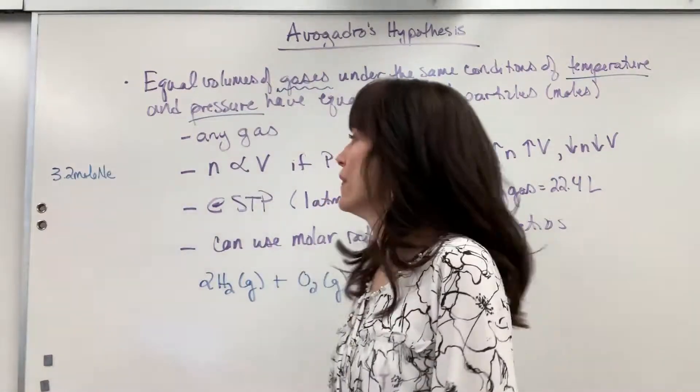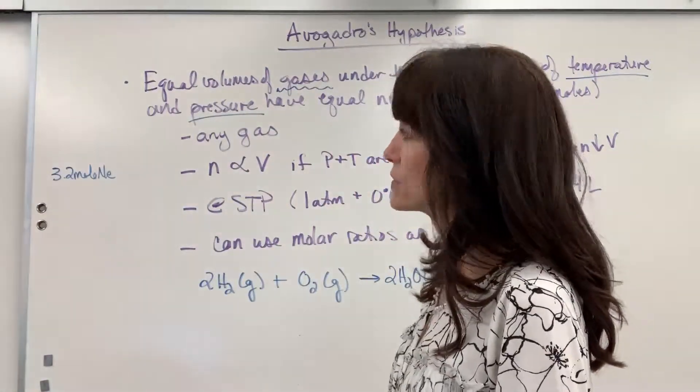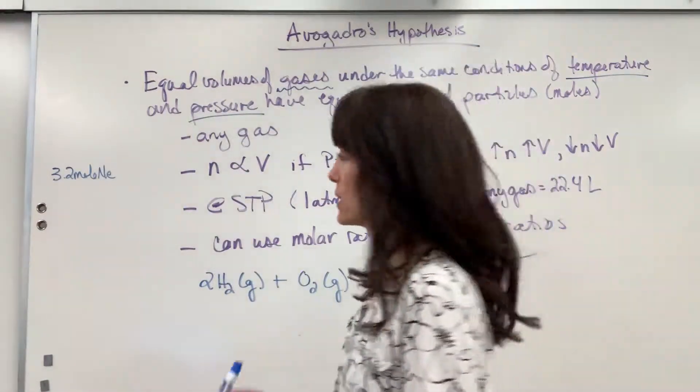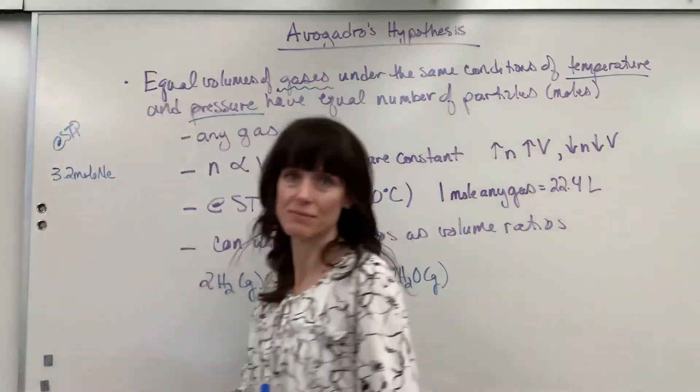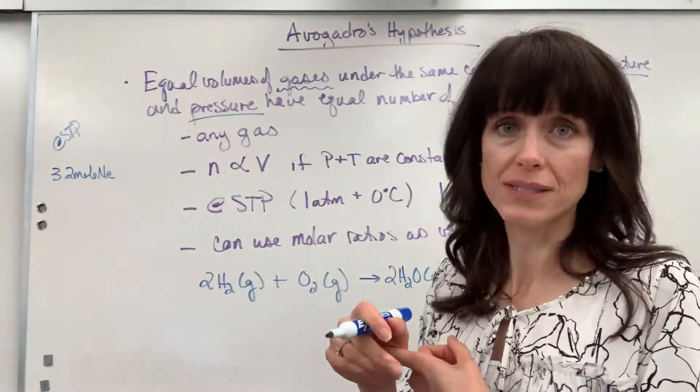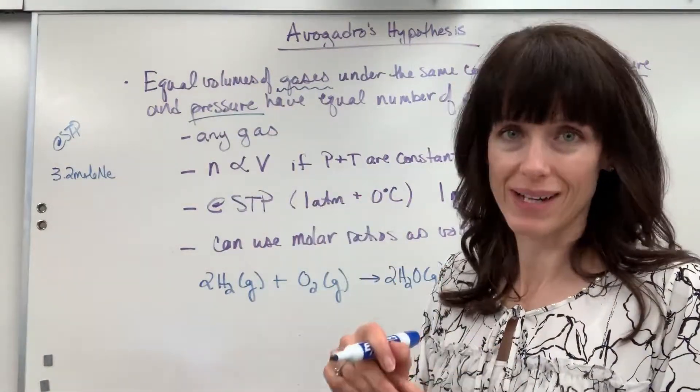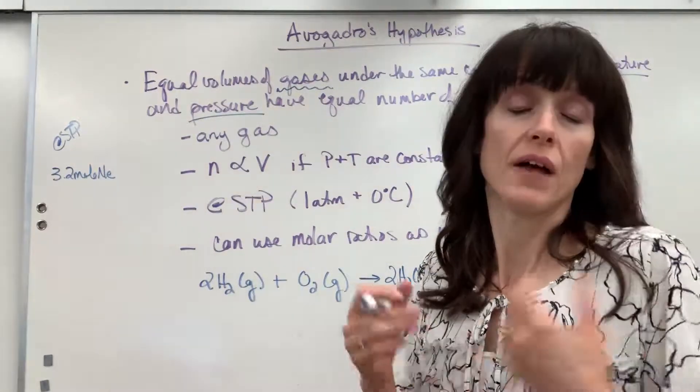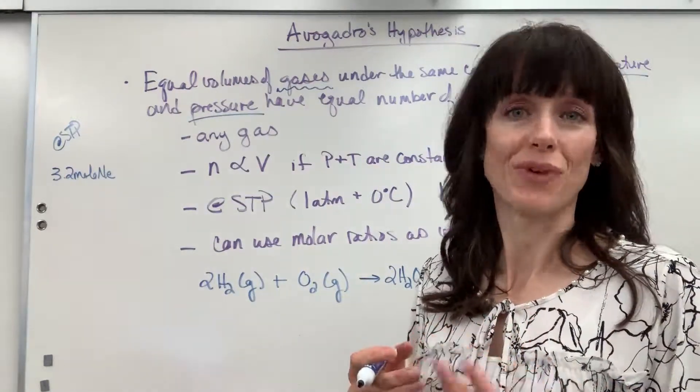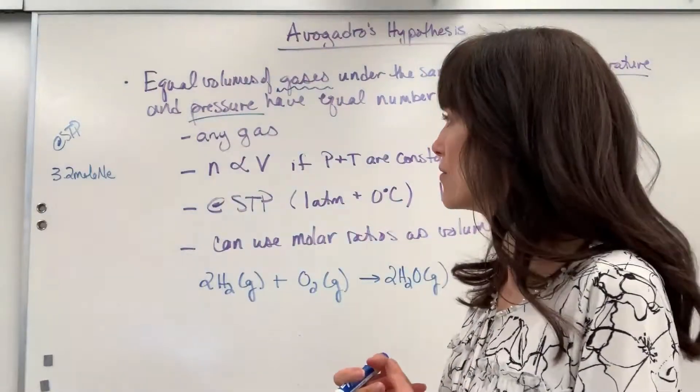So, let's pretend that we have 3.2 moles of neon. Now, here's the important thing. It has to be at STP. I'm at a temperature of 0 degrees C and a pressure of 1 atm. So, I'm at STP and I have 3.2 moles of neon. And the question is, what's the volume? How many liters do we have of neon?